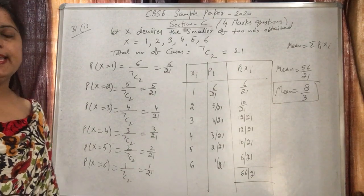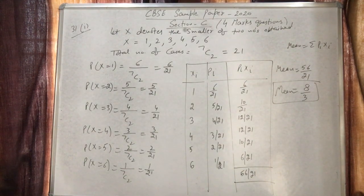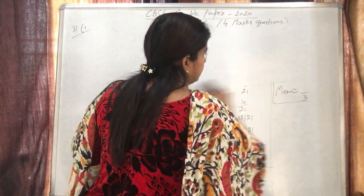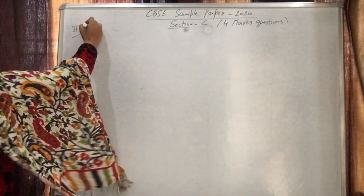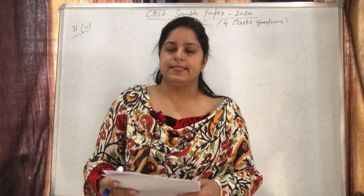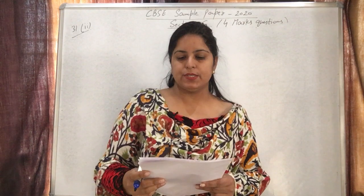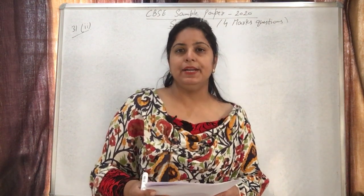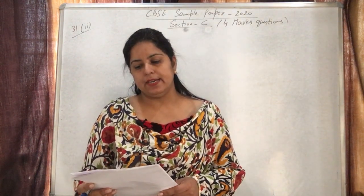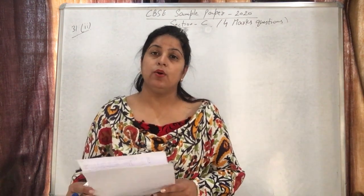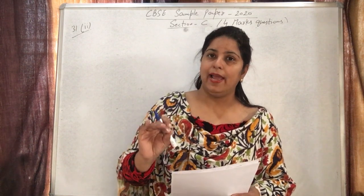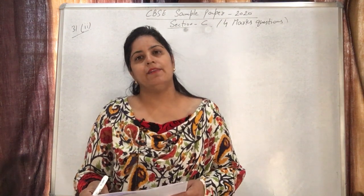The second part of question 31 is the Bayes' theorem option. There are 3 coins: E1 is a two-headed coin (head on both faces), E2 is a biased coin that shows head 75% of the time, and E3 is an unbiased coin. One coin is chosen at random and tossed. If it shows head, what is the probability it was the two-headed coin? Since head has already occurred, this is Bayes' theorem.